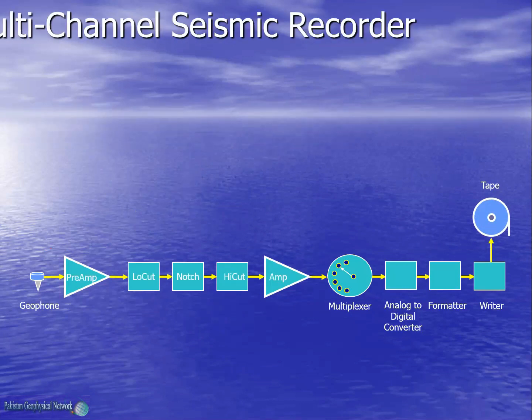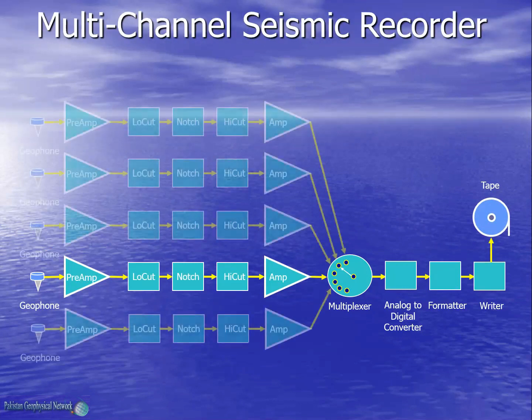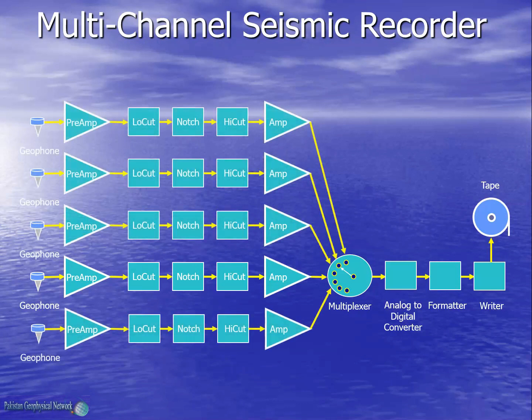Here we showed a single seismic channel, but practically a seismic recorder consists of a number of channels. The multiplexer switches one by one each seismic channel to the analog to digital converter for conversion into digital form.